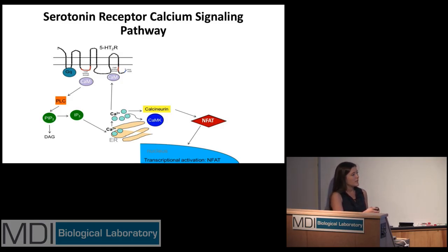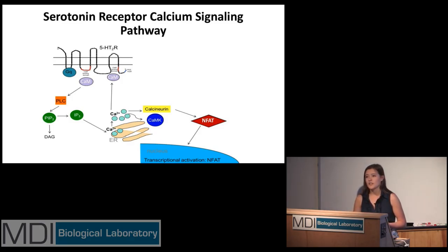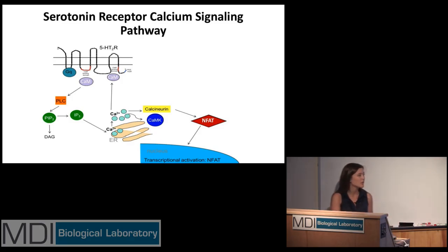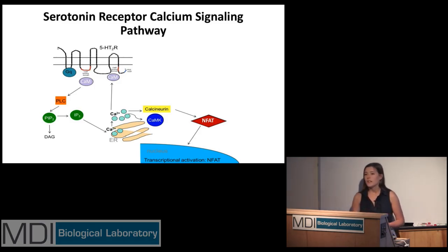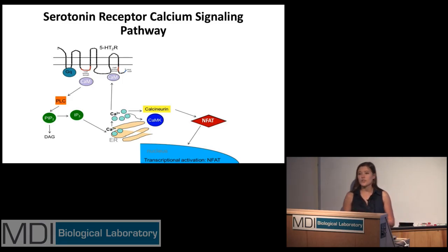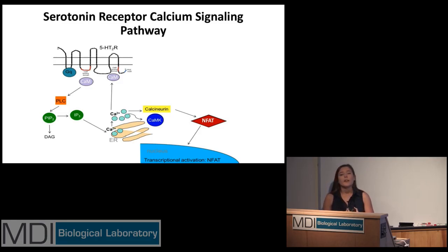Another process that calcium is highly involved in is the activation of calcineurin. Calcineurin is known to dephosphorylate important transcription factors known as NFAT, and after dephosphorylation these NFAT factors are able to migrate from the cytoplasm into the nucleus and aid in viral transcription. It has previously been shown that if we knock down NFAT, we have absolutely no replication of the virus.